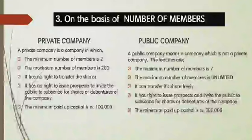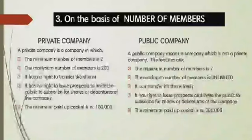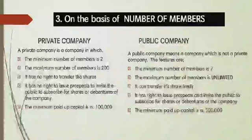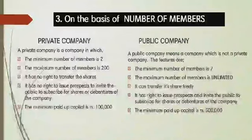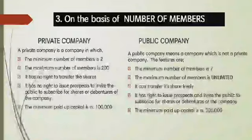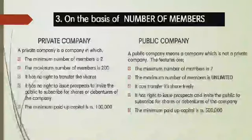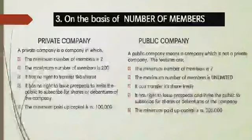The minimum paid-up capital of a private company is rupees one lakh. A public company can call the public to buy shares. In a public company, the minimum number of members is seven and the maximum is unlimited. Members can transfer shares freely, the company can issue a prospectus to the public, and the minimum paid-up capital is rupees five lakhs.